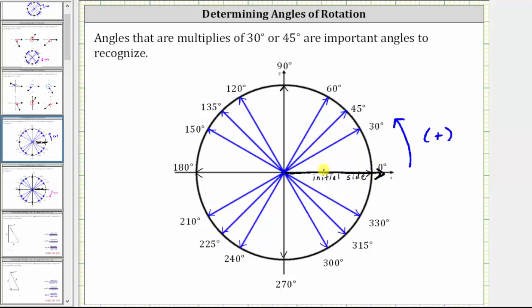So rotating counterclockwise, we have 30 degrees, 45 degrees, 60 degrees, 90 degrees, and so on. One complete rotation counterclockwise is equal to 360 degrees.